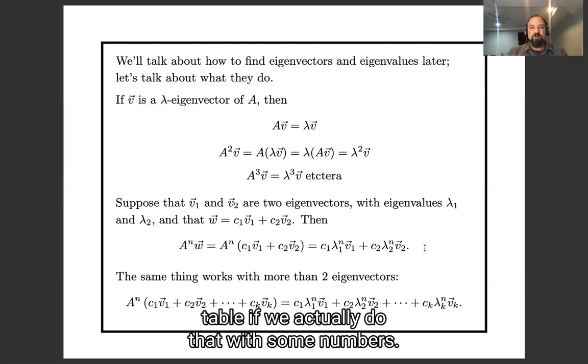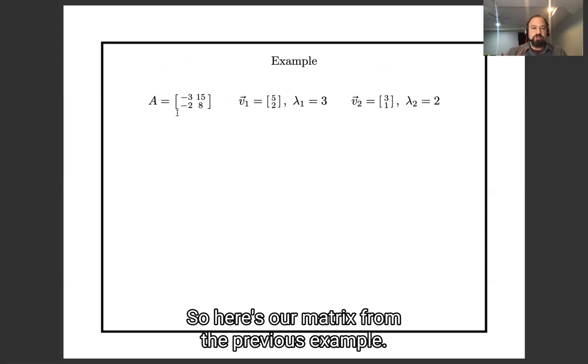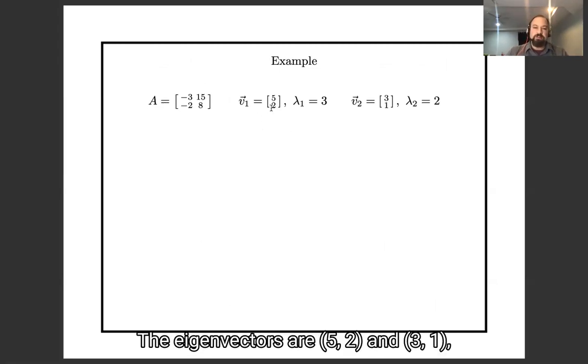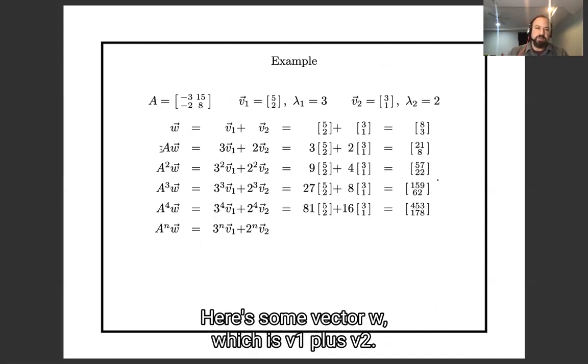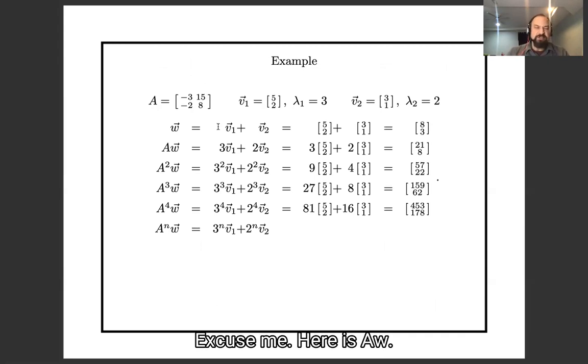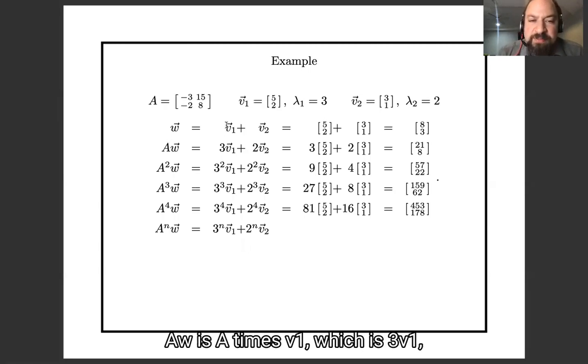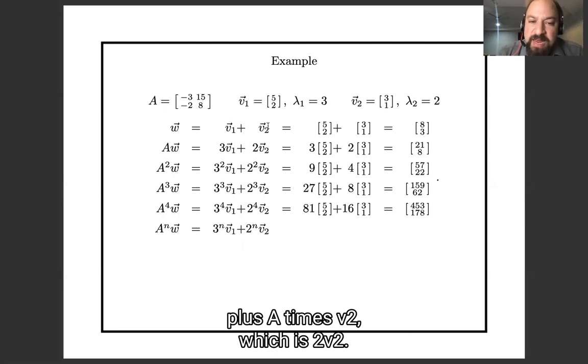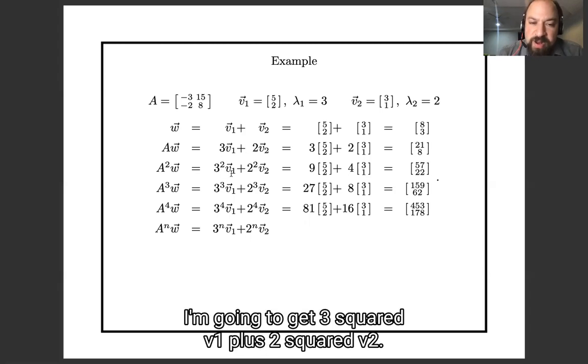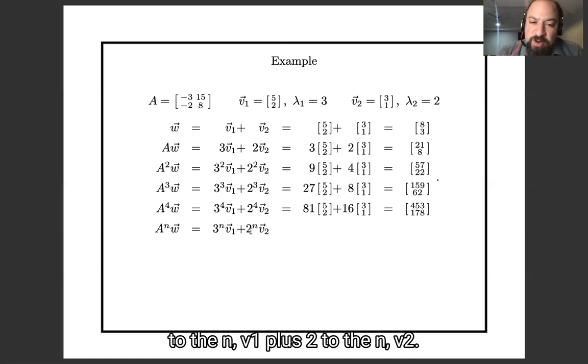Let's see what that looks like in the sense of a table if we actually do that with some numbers. Here's our matrix from the previous example. The eigenvectors are [5,2] and [3,1], and the corresponding eigenvalues are 3 and 2. Here's some vector w, which is v₁ plus v₂, it's [8,3]. Here's Aw, so Aw is A times v₁, which is 3v₁, plus A times v₂, which is 2v₂. If I take A²w, I'm going to get 3²v₁ plus 2²v₂. And in general, A^n w is going to be 3^n v₁ plus 2^n v₂.